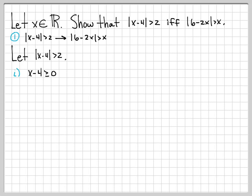Case i is the special case where x minus 4 is greater than or equal to 0. By assuming this, we can replace the absolute value sign with just x minus 4, since if x minus 4 is greater than or equal to 0, there is no need to take an absolute value because it is already a positive quantity. So starting from our assumption, absolute value of x minus 4 greater than 2, we can just write x minus 4 is greater than 2.